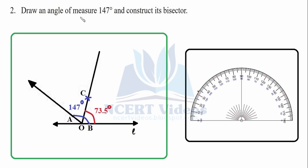Draw an arc with a small radius and mark points A and B. From B, open with the same radius — you can also take another radius — and from A as well. Wherever the arcs cut, that point C will be your bisector. Half of 147 degrees is 73.5 degrees, so you divide it into two equal parts of 73.5 degrees each.